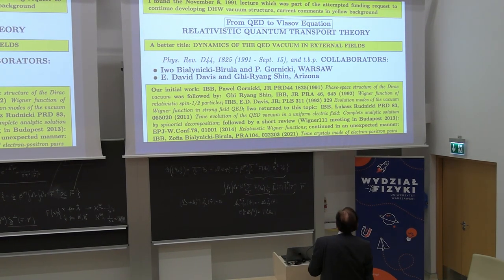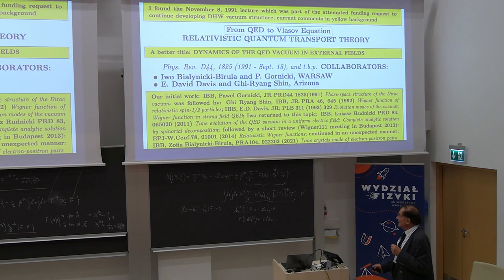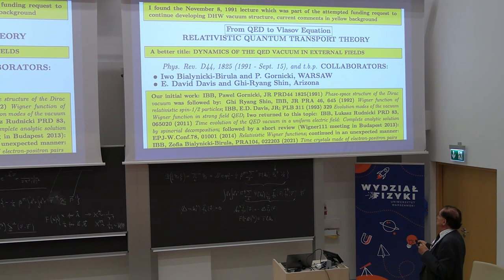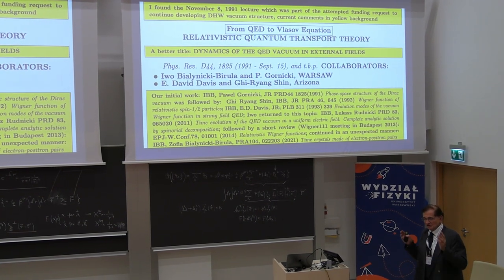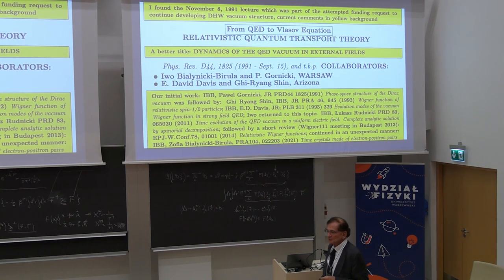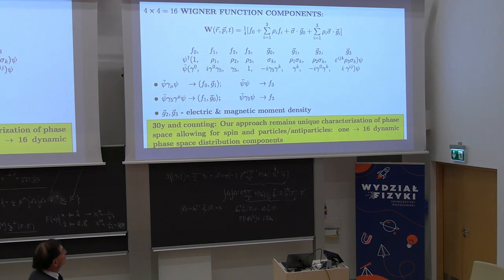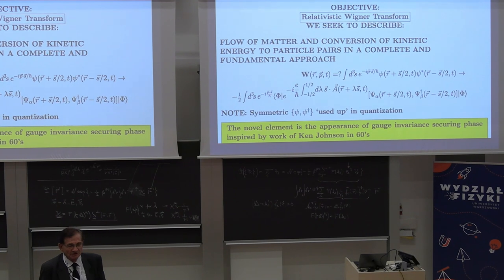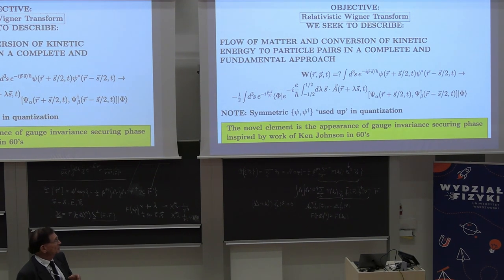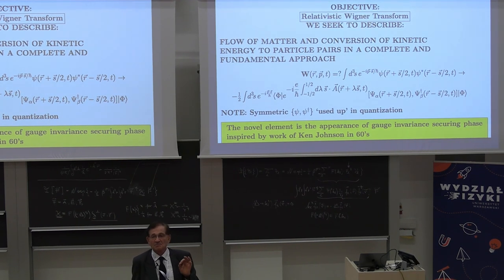So this is the approach which we pioneered, dynamics of QED vacuum in external fields. This is the list of papers which came out of it. Most of the recent work, recent means 10, 15 years, is done by Ivo and collaborators, because Professor Rafelski is still busy with other things. But maybe time is changing. So what did we invent that is so useful and is so lasting? We had the courage, for reasons which will be explained in a moment, to tackle the Wigner function description of vacuum structure and find a gauge-invariant path to it.